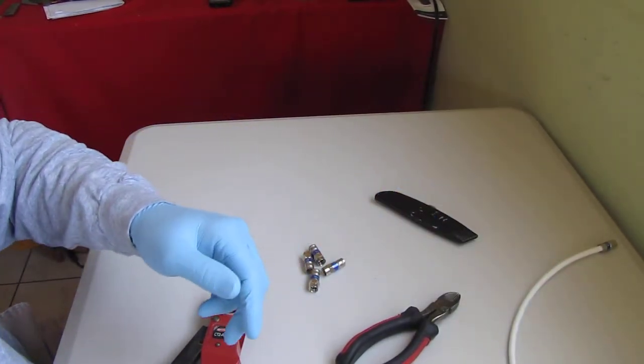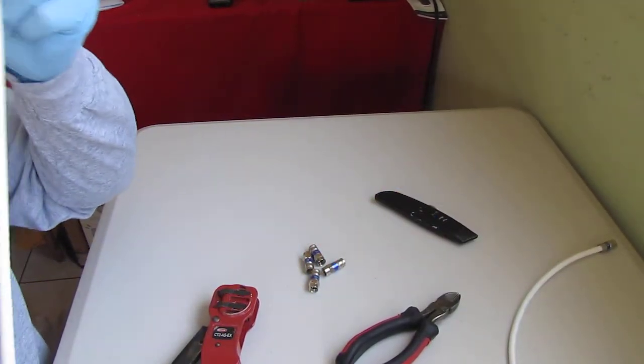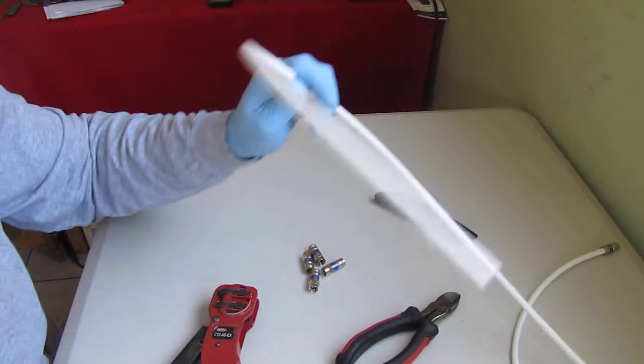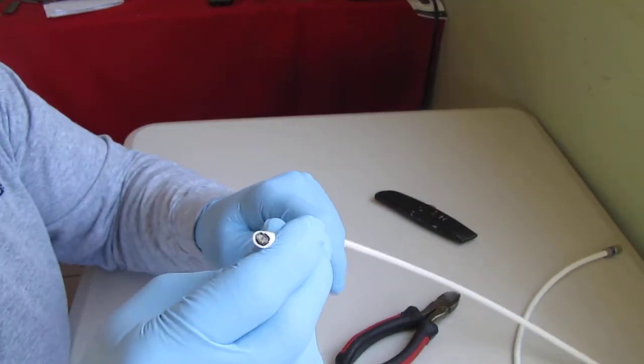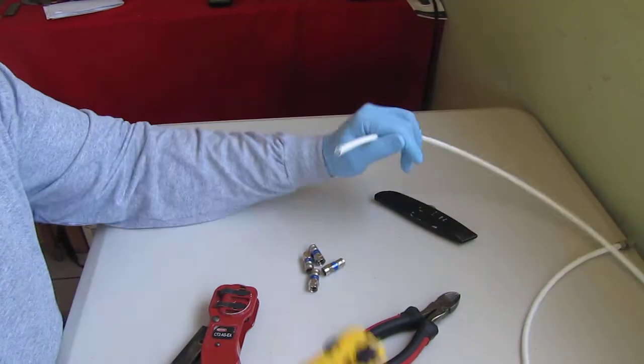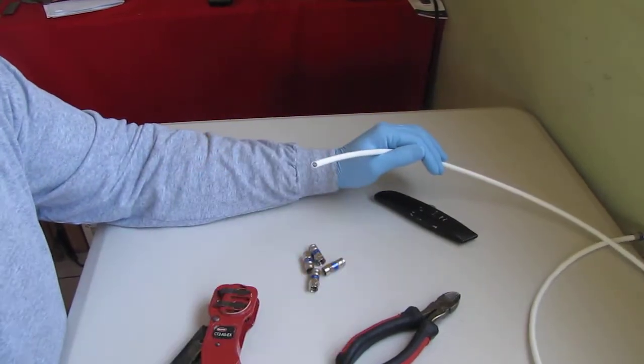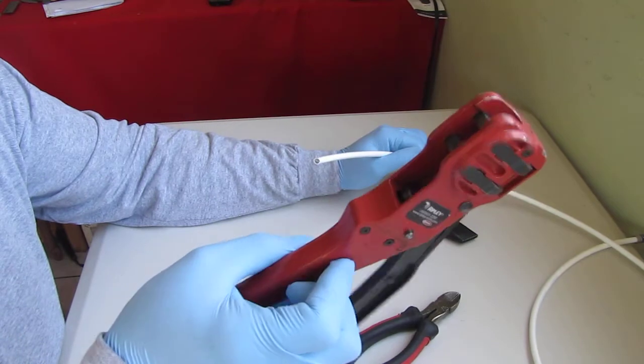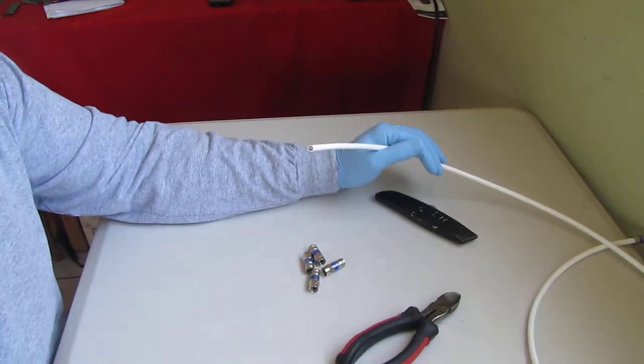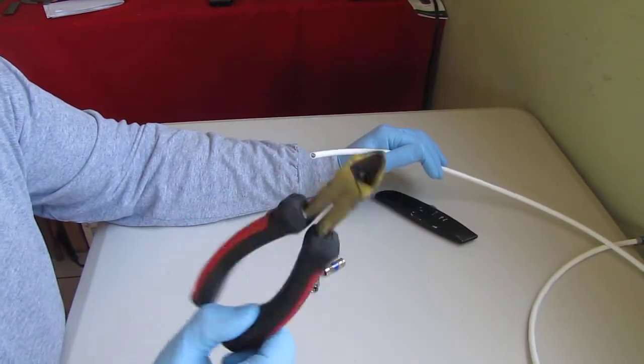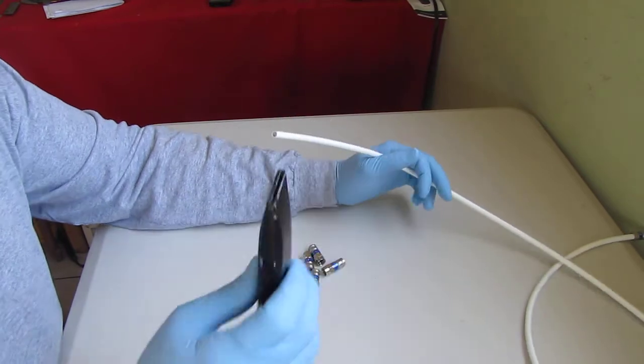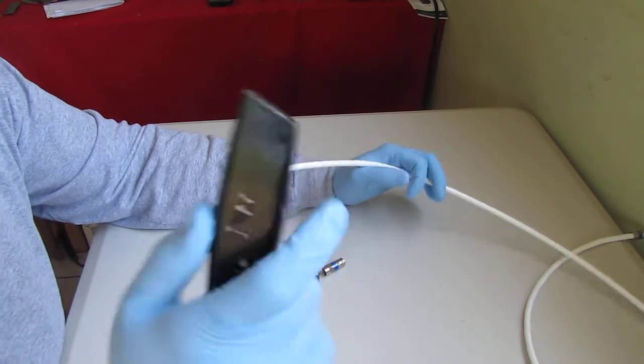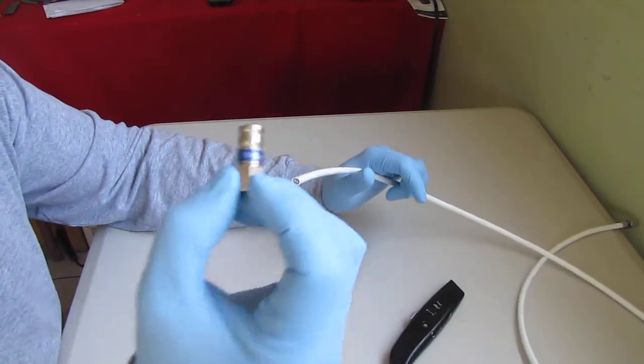So I've already got some cable over here that I already cut off. Now this is 18 gauge so you want to get it properly. So what you're going to need is a stripper, you're going to need a crimping tool, you're going to need cutters, and maybe one of these, a box cutter, but you might not, and a connector.